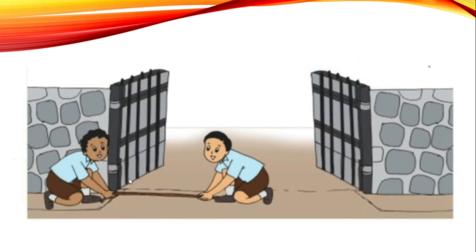Here two children are standing in front of an open gate with two doors. They want to measure the distance from one door to the other. They are using a rope or thick thread to measure the distance between the two gates.